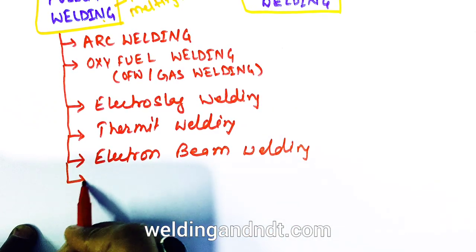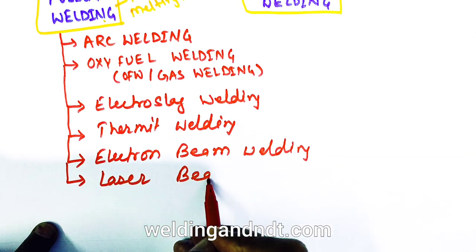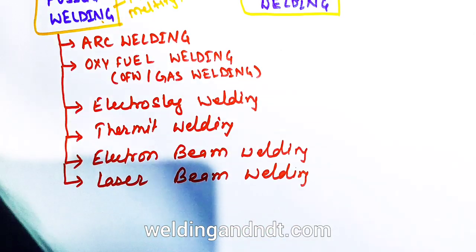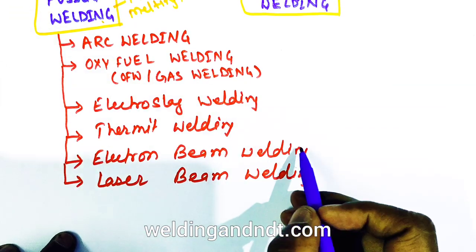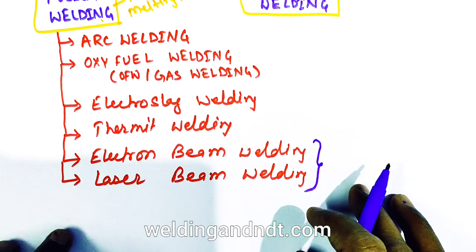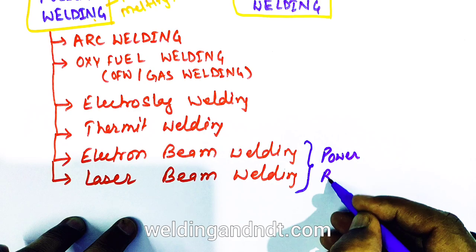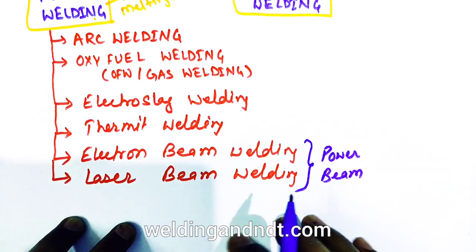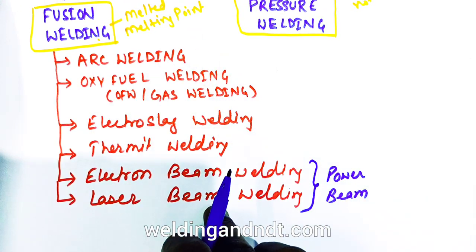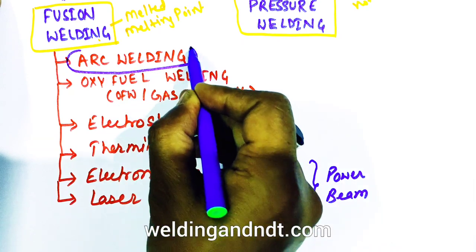The sixth fusion welding process is laser beam welding. Electron beam welding and laser beam welding are combinedly called the power beam welding process. Among all these, arc welding is very popular and very common in industry, and arc welding is further classified into several subtypes.